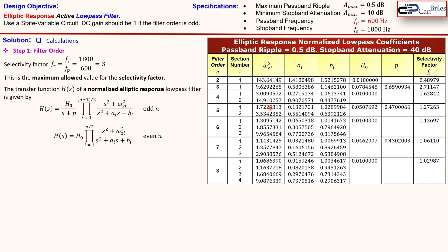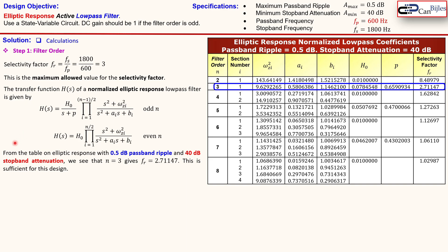From the table we can see parameters like a_i and b_i, where the subscript i is the filter stage or section number. There is also the parameter h0, which is the pole-zero gain. For our case we need the third-order row, and we look at the relevant entries in the table.